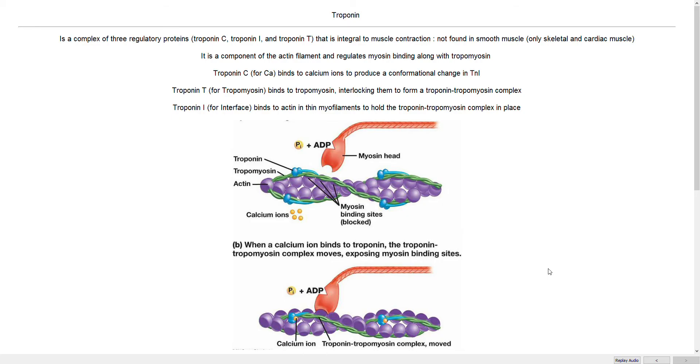And these proteins each have their own little function. Now if you look at this diagram below here, you can see the troponin, this blue bead, is found bound to actin. And you can find troponin in different kinds of muscle cells, cardiac muscle, skeletal muscle, but you won't find it in smooth muscle.